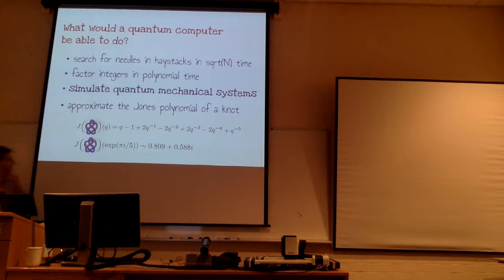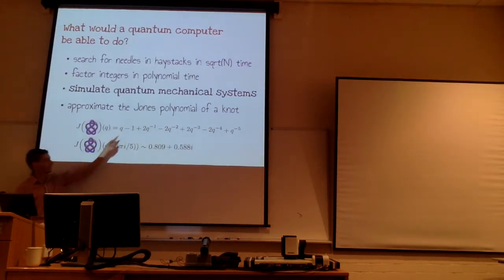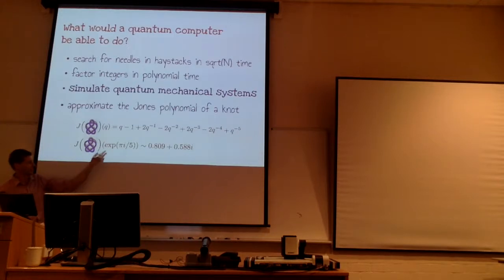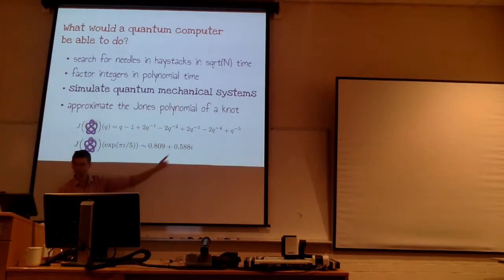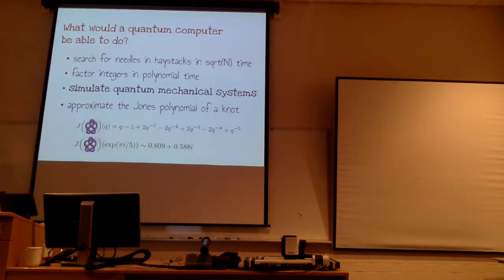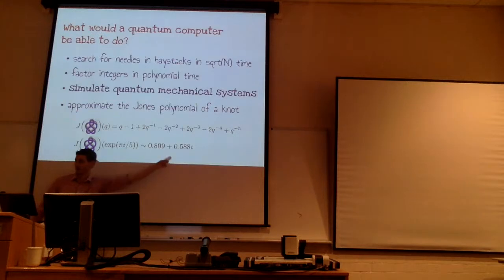I'm letting myself have negative exponents, and I can stick in some value of q in this polynomial. For example, I can stick in a complex number — a fifth root of unity — and just get some number out. The Jones polynomial of this knot at this root of unity is about 0.8 plus 0.6 times i. And something that quantum computers can do, but that is apparently slow for classical computers, is exactly this: evaluating these numbers for the Jones polynomial.